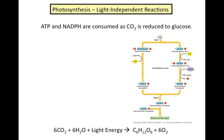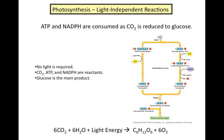In the dark reactions, also known as the Calvin Benson cycle, carbon dioxide gets reduced to form glucose as ATP is broken down into ADP and inorganic phosphate, and NADPH is oxidized to NADP+. No light is required for this process to occur, but the ATP and NADPH that were made in the light-dependent reactions are consumed during the Calvin cycle.